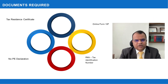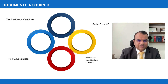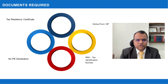About the document requirements: the first document that is required to be provided is an online Form 10F. What exactly is Form 10F? It is a declaration where you provide your tax details in the country where you are a tax resident and for which you want to claim the treaty benefit.